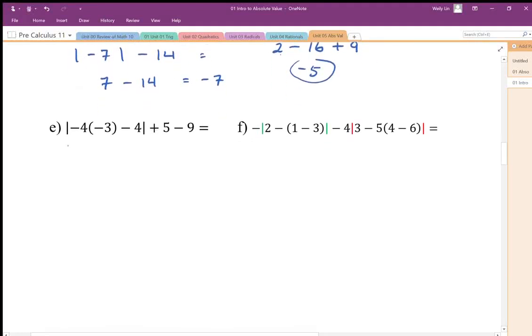Here we want to work on the inside first, so we do the multiplication first. Negative times negative is positive, minus four. We could actually do this together because it's all just addition and subtraction. Five minus nine is minus four. Do the brackets first, we get eight, absolute value minus four. That becomes eight minus four, that's equal to four.